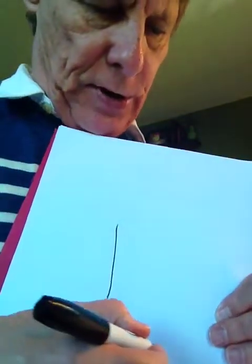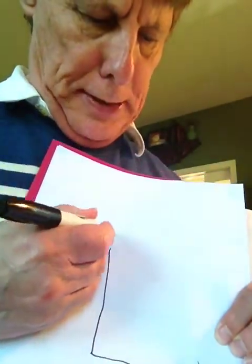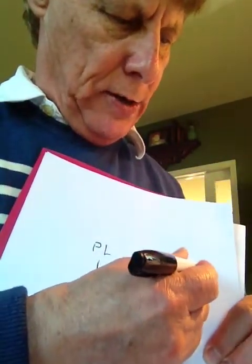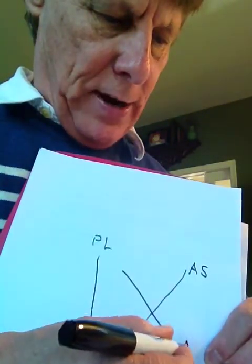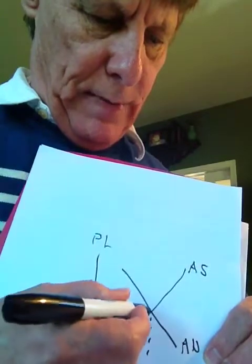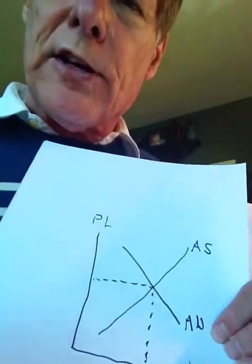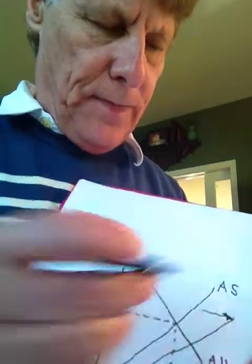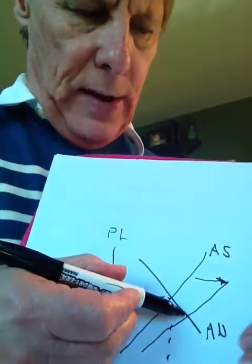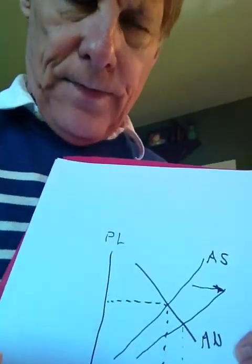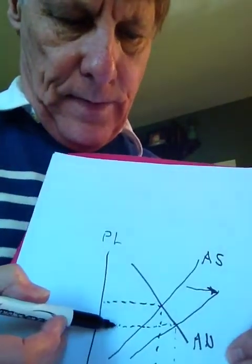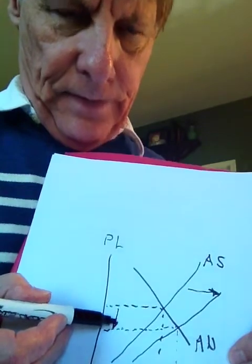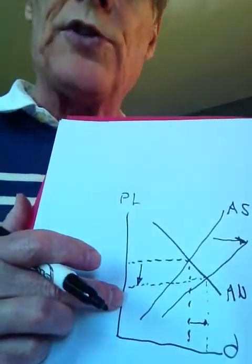Let's see what would happen if the aggregate supply curve shifted to the right. Here's our set of axes — output and price level. There's the aggregate supply curve, there's the aggregate demand curve, and there's the equilibrium level of output and equilibrium price level. If the aggregate supply curve shifts to the right, the equilibrium level of output will go up. Look what happens to the price level — the equilibrium price level falls.